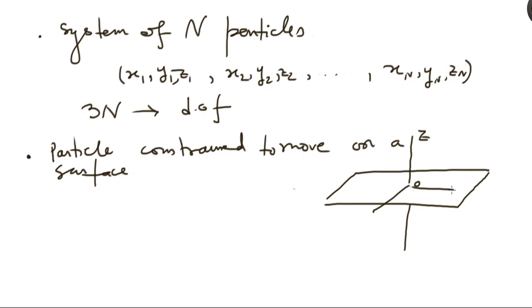Now, how many degrees of freedom does this particle have? Well, it has only two degrees of freedom. You just need to tell what the x and y coordinates are because there is nothing to be told about z. Wherever it goes, it is always at the same z. So, this guy has two degrees of freedom.